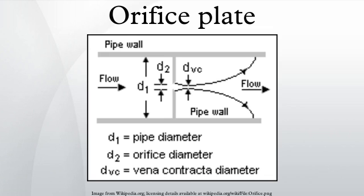An orifice plate is a device used for measuring flow rate, for reducing pressure, or for restricting flow. Either a volumetric or mass flow rate may be determined, depending on the calculation associated with the orifice plate.